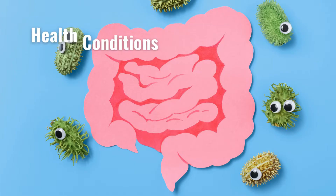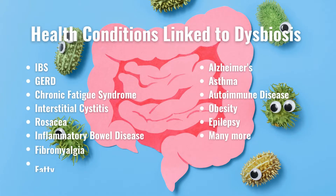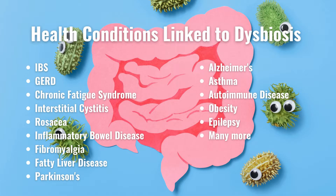What health conditions are linked to dysbiosis? There are many, and some have argued that most health issues begin in the gut. But some prominent conditions include IBS, GERD, chronic fatigue syndrome, interstitial cystitis, rosacea, inflammatory bowel disease, fibromyalgia, fatty liver disease, Parkinson's, Alzheimer's, asthma, autoimmune disease, obesity, epilepsy, and many more.